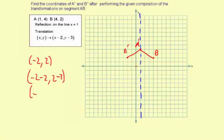So you're going to get negative 4, negative 1 for B double prime. And that point will be down here. So go negative 4, negative 1. So that's B double prime.